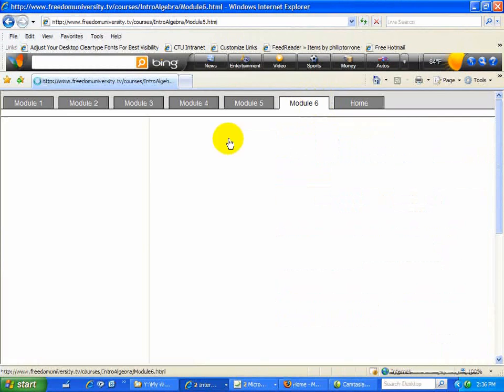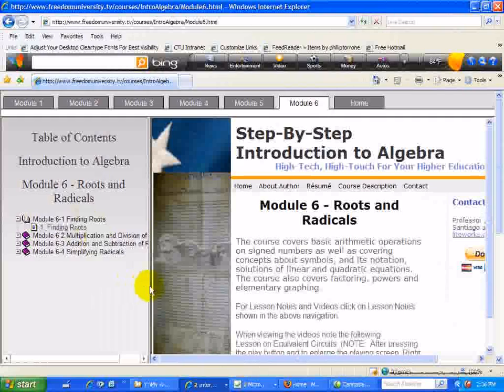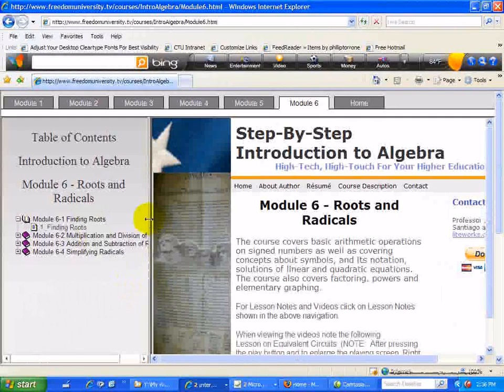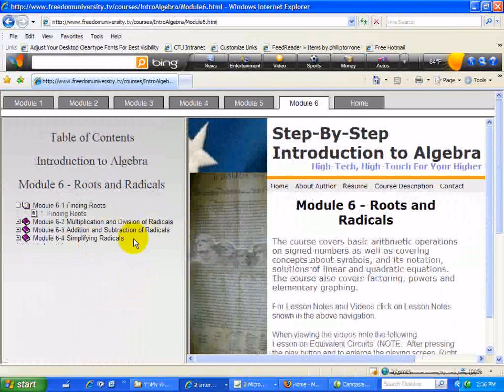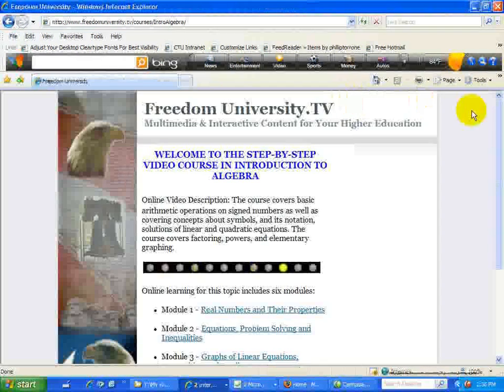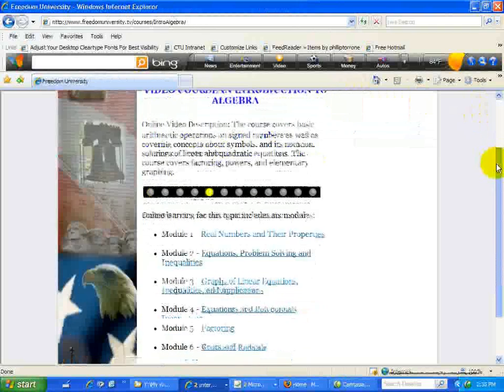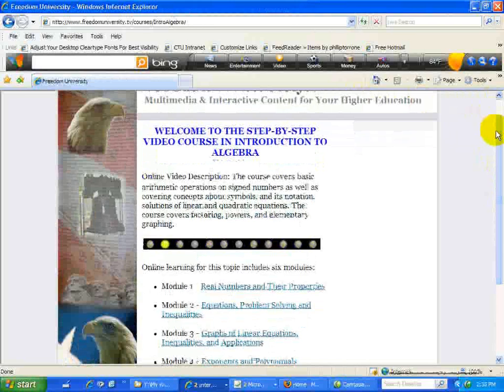Finally, our last module deals with roots and radicals, where we try to find the roots. Then we deal with the multiplication and division of radicals, as well as the addition and subtraction, and then how we simplify radicals. And again, this is associated with roots. So that concludes this introduction to algebra, consisting of six modules. You can get back to the home page to see what they are again. And that concludes this basic introduction on how this series of videos is presented.